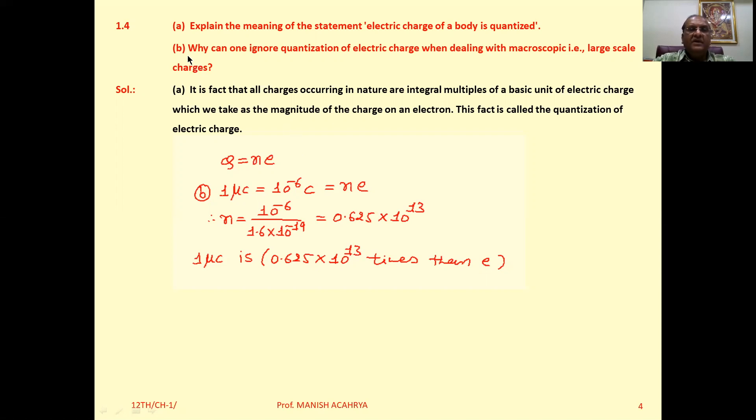Now, question (b): Why can one ignore quantization of electric charge when dealing with macroscopic, large-scale charges? Suppose we consider 1 microcoulomb charge. Then 1 microcoulomb charge is 10^-6 coulomb.